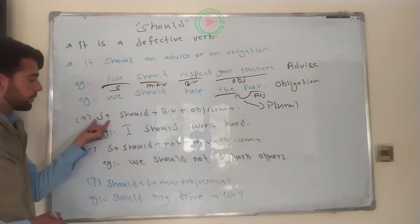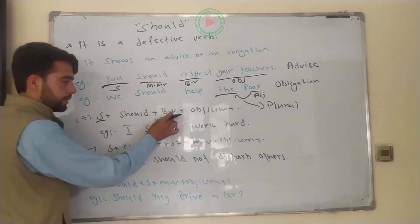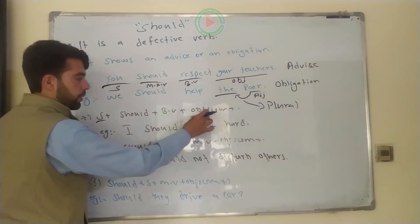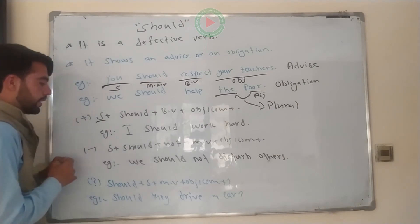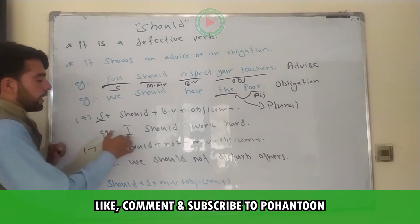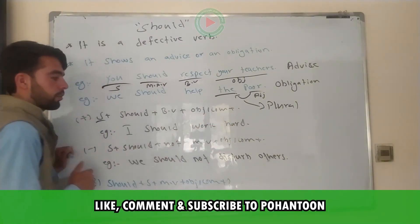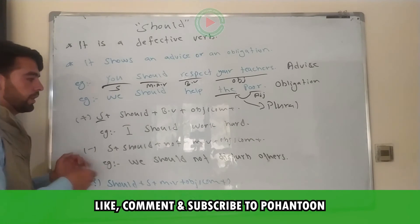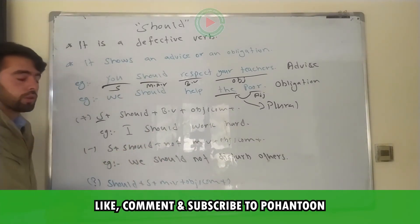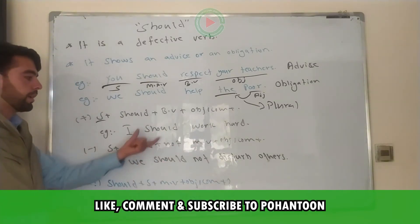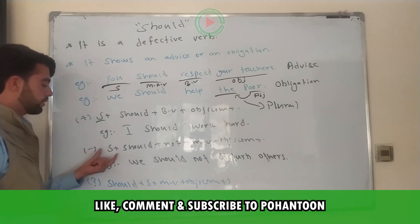The positive structure is: Subject + should + base form of verb + object or complement + full stop. For example: 'I should work hard.'